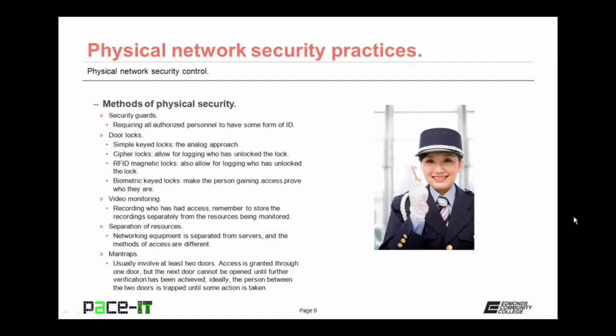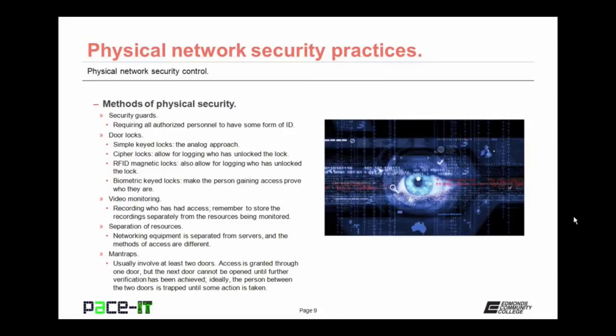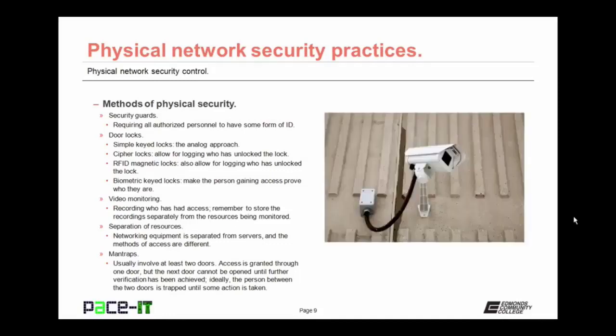One of the most advanced types of door locks is a biometric lock — locks that make the person prove who they are through a fingerprint scan, a retinal scan, or possibly even a voice print. Video monitoring can also be deployed as a form of physical security, allowing you to record who has had access to resources. Remember to store the recordings separately from the resources being monitored, so if the resource gets stolen, they don't steal the recording as well.